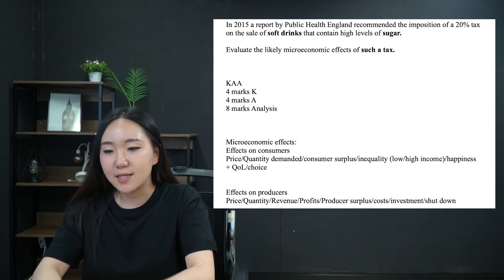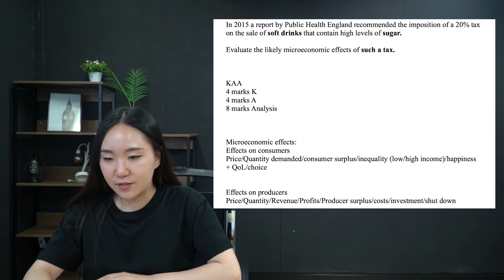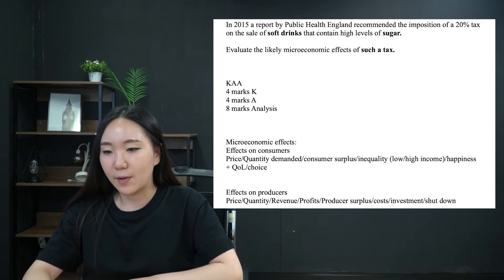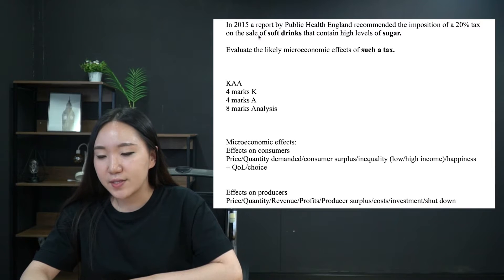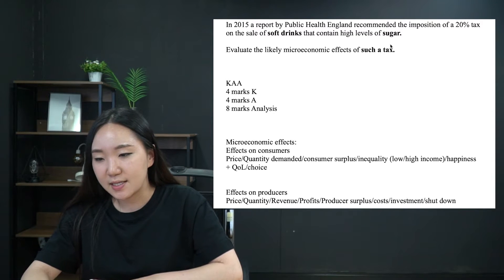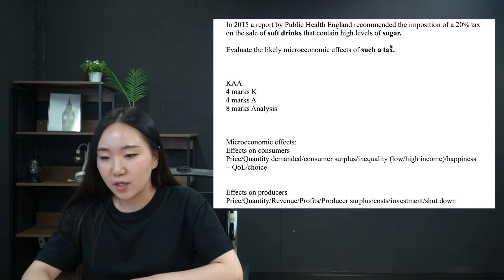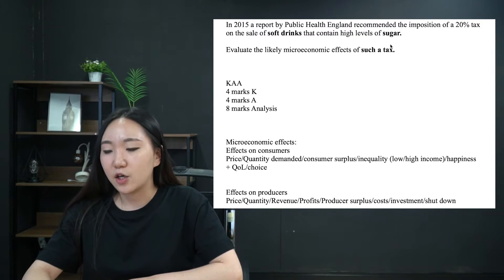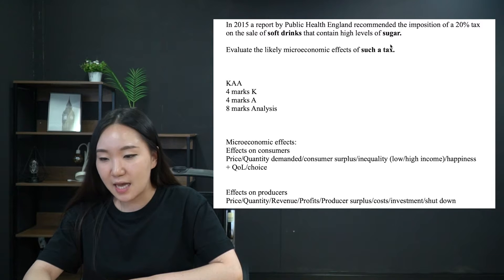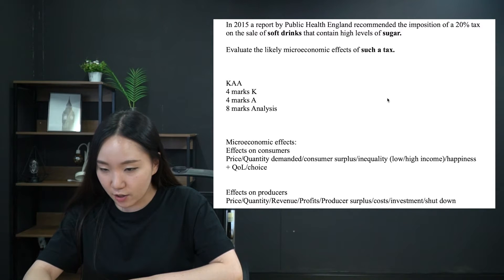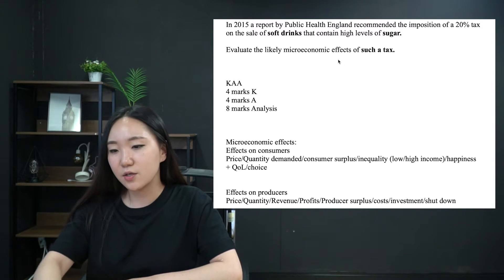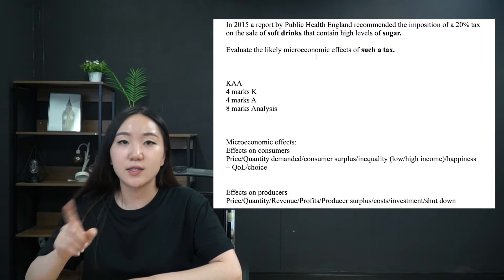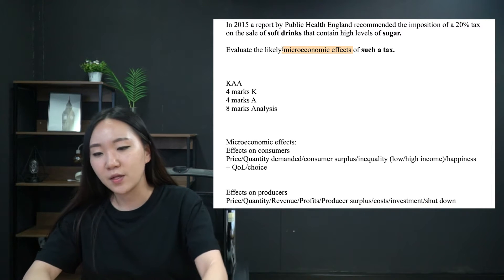So let's go through this one. In 2015, a report by Public Health England recommended the imposition of a 20% tax on the sale of soft drinks that contain high levels of sugar. Evaluate the microeconomic effects of such a tax. The first thing you notice is 'microeconomic effects' — I love this. As soon as you see that, choose this question, 100%.